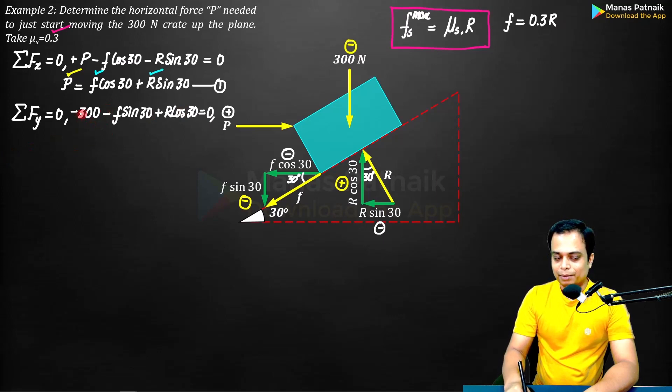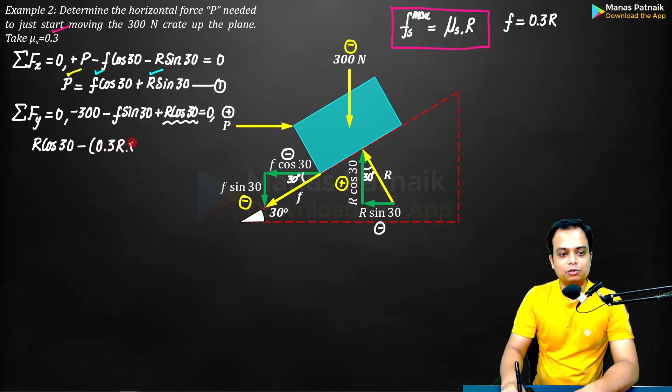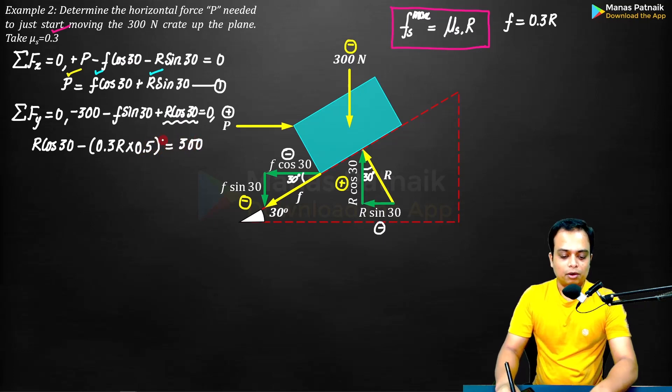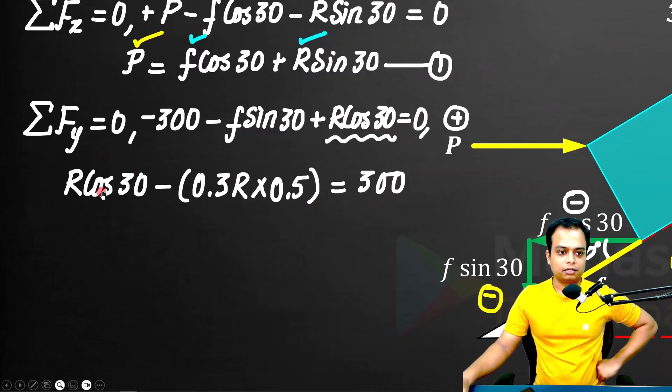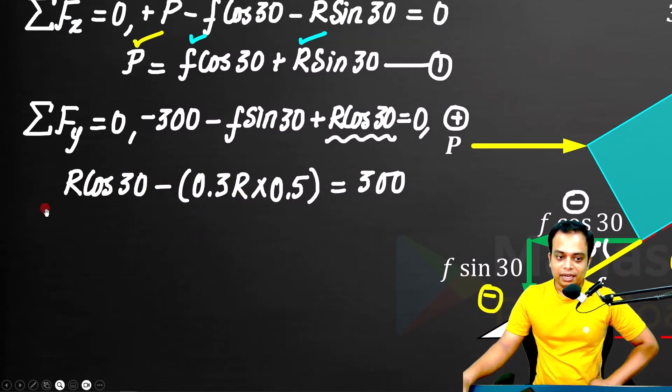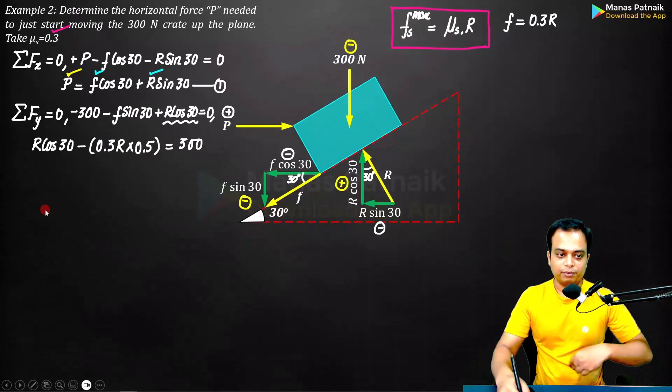We'll take minus 300 to the right hand side, it will become positive. Let me write this R cos 30 first. R cos 30. What else? Minus f sin 30, so minus f is nothing but 0.3R. Let me write it this way: 0.3R times of how much is sin 30? Sin 30 is nothing but 0.5. And this is going to be equal to positive 300. Now if you observe carefully there is one equation and one unknown. That unknown happens to be R.